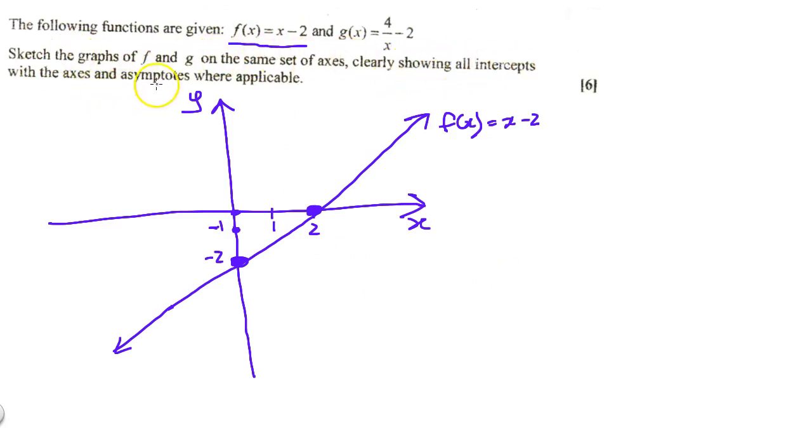Show all x intercepts with the axis asymptotes when applicable. Let's look at this next function G(x) equals to 4 over x minus 2. Once again, we're going to use the calculator. But before we do that, let us look at the functions. Remember that a hyperbola has two asymptotes.